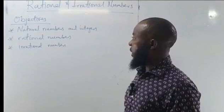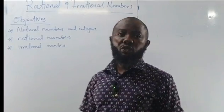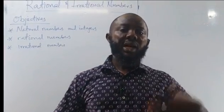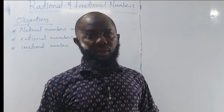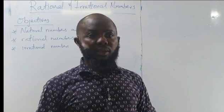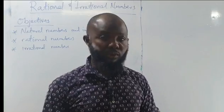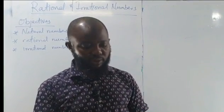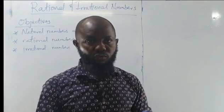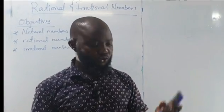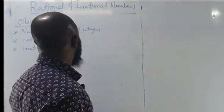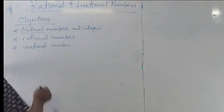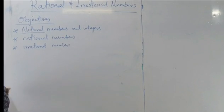So firstly, natural numbers. When we talk about natural numbers, we are talking about counting numbers — numbers that we can use to count items. Like, for example, we have three markers: one, two, three. So natural numbers are counting numbers.